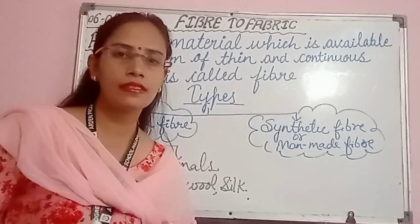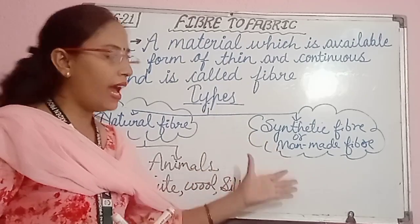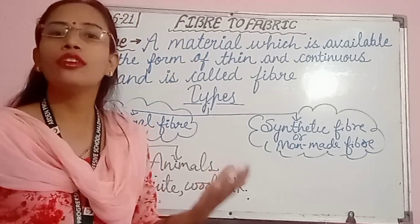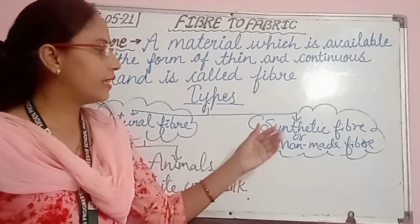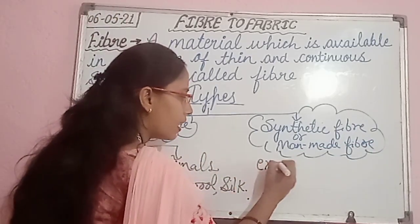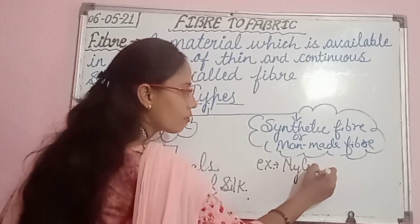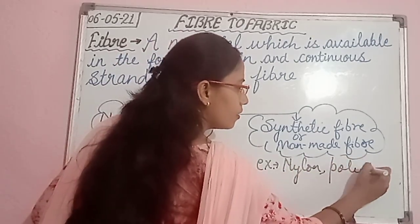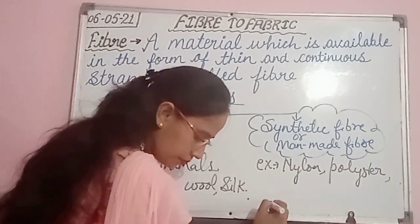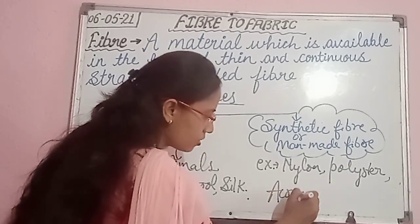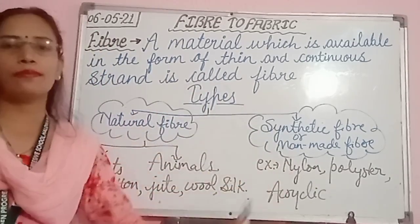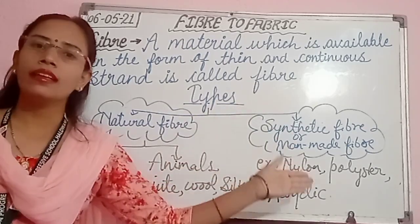Synthetic fibers are also known as man-made fibers. They are synthesized in the laboratory by human beings, that's why they are known as man-made fibers. Examples of man-made fibers are nylon, polyester, and acrylic also comes under this category. So these are the two types of fibers - natural and synthetic.